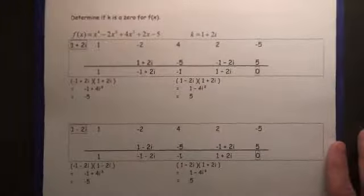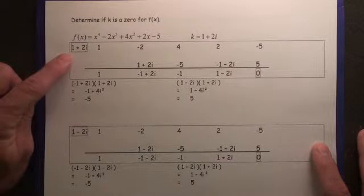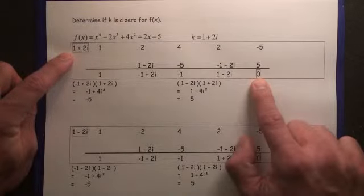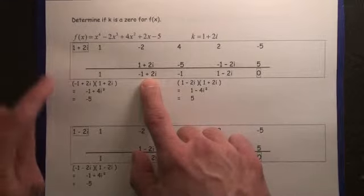Here's why. Let's just go through an example. If 1 plus 2i turns out to be a zero, look what happens during the synthetic division process.